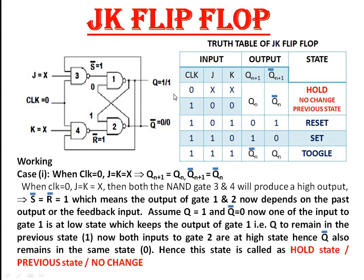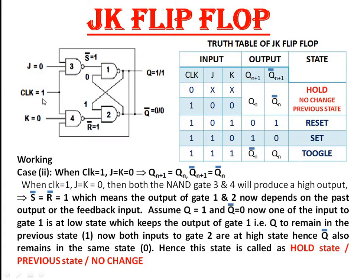Case 2: when clock is applied, J = 0, K = 0. We can notice that there is a change in the input combination for gate 3 and gate 4, but for gate 1 and 2 the input combinations S̄ and R̄ remain the same. This is because one of the inputs to gate 3 and gate 4 is at low state, hence it produces a high state. When S̄ = R̄ = 1, it enters into hold state. So when clock is applied but J and K are both 0, the flip-flop enters into hold state.